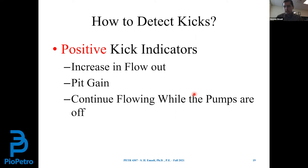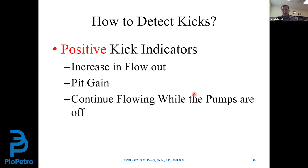Now we know the reasons why abnormal pressure formations may form. The next part is how we can detect the kick. We want to prevent the kick from happening — this is our primary goal. However, sometimes we fail, and kick happens. The question is: how can we detect kicks? We need to know about kick indicators. Kick indicators are categorized into two main categories: positive and possible.